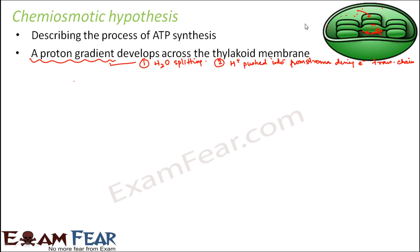As a result, the concentration of protons inside the thylakoid space becomes very high, while the concentration of protons in the stroma remains very low. This creates a proton gradient. By the concept of osmosis, any particle tends to move from a region of high concentration towards a region of lower concentration. So the protons will want to move from the thylakoid space towards the stroma.